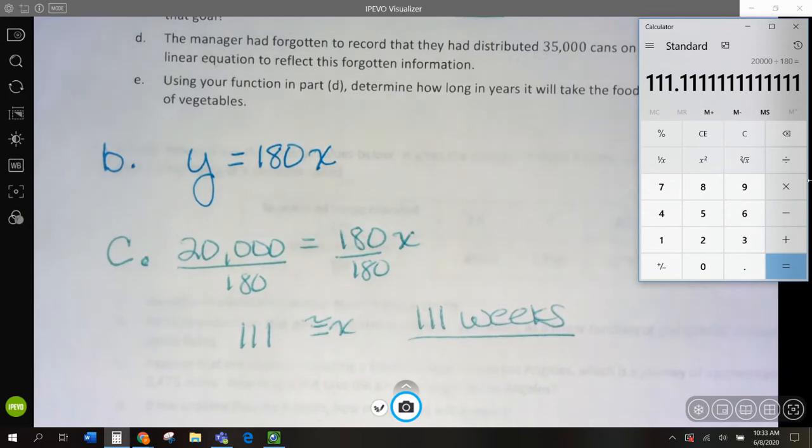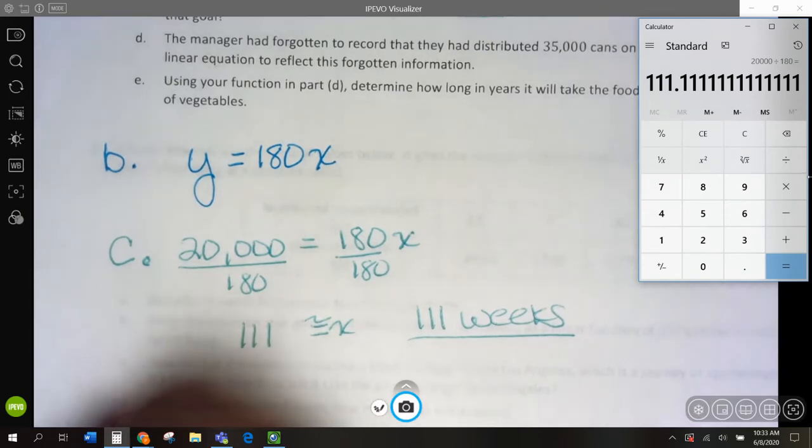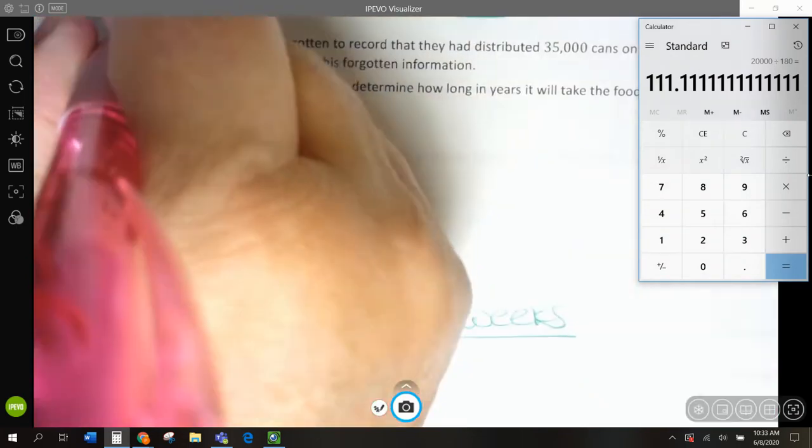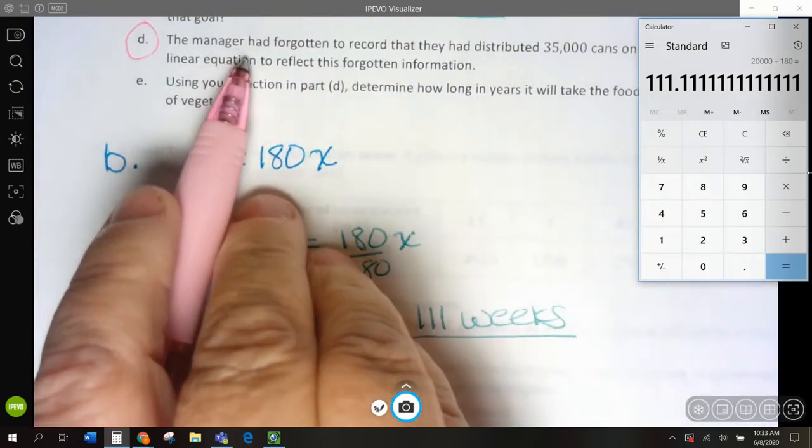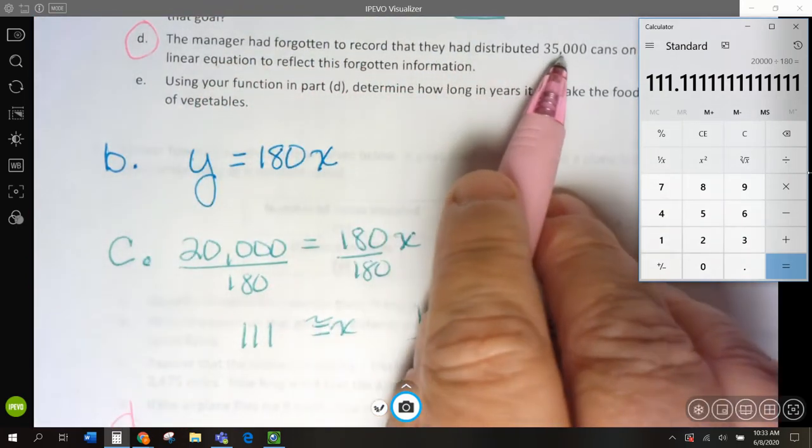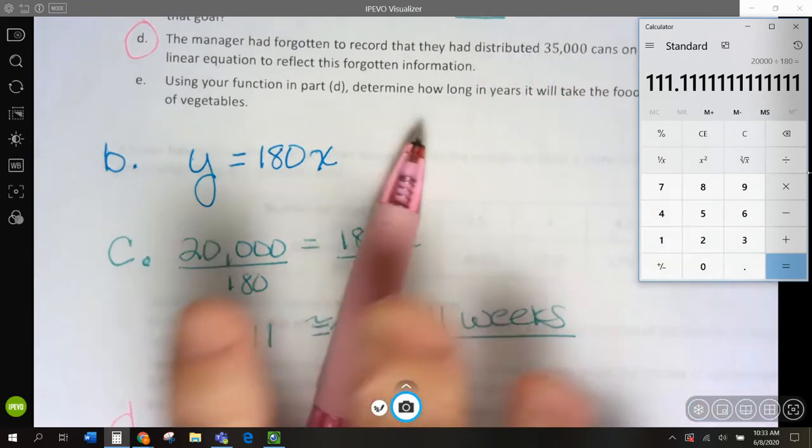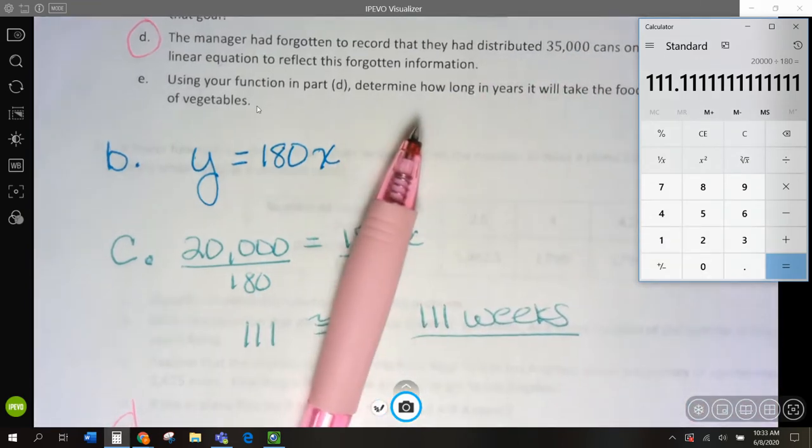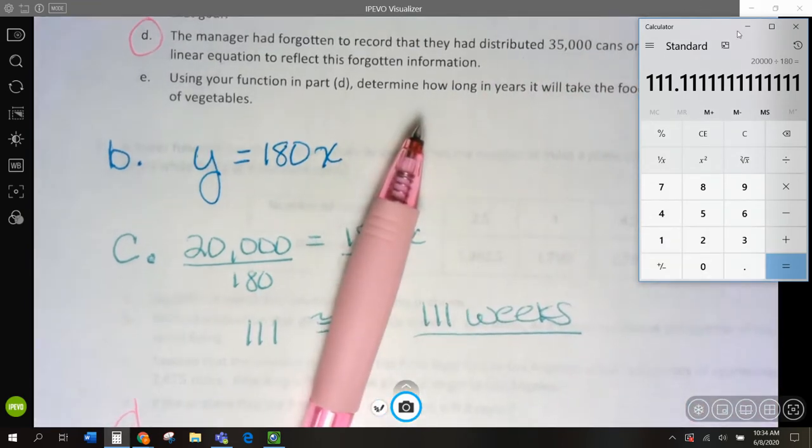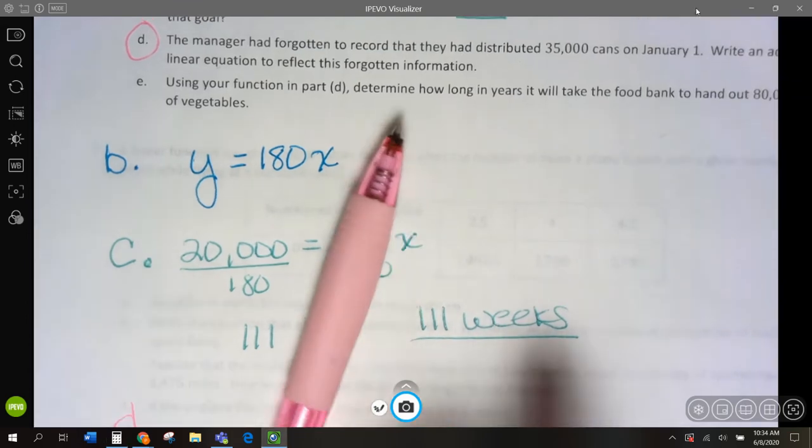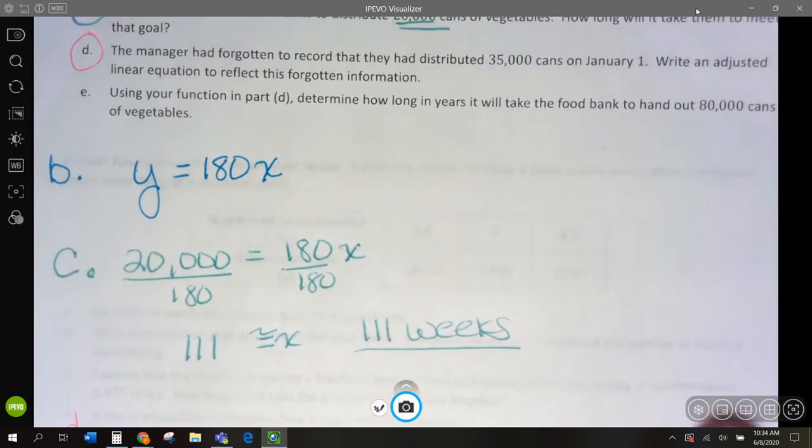Let's go to D. The manager has forgotten to record that they distributed 35,000 cans on January 1st. So before this started, January 1st, they already had 35,000 cans out.